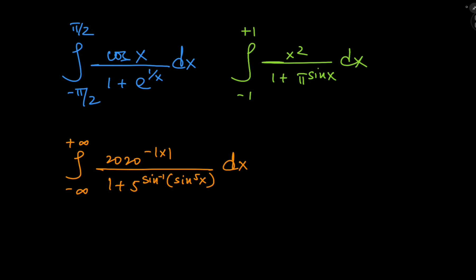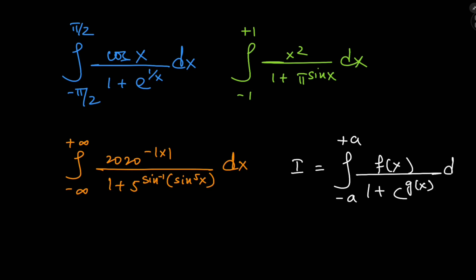They look absolutely ridiculous, but you can solve all of them using their common structure. What do I mean by common structure? You can generalize them as integrals I over symmetric intervals from negative to positive a of functions f of x divided by 1 plus some constant c to the g of x dx. The functions f of x are all even functions, while g of x is always going to be an odd function. This kind of structure introduces nice symmetry that we can exploit to solve these impossible looking integrals in seconds and impress everyone as a party trick.